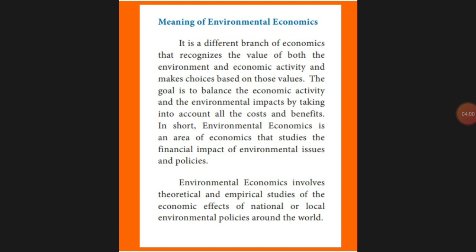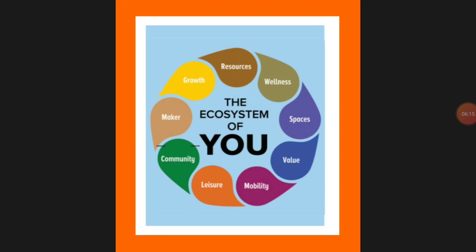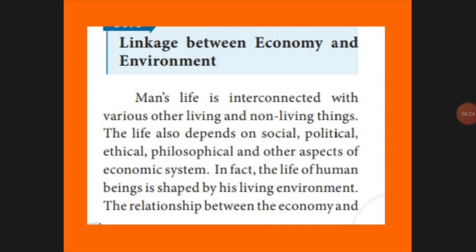An ecosystem includes living and non-living things. Living things include plants, animals, and organisms. Non-living things include weather, earth, sun, and soil. These are all the foundation of the biosphere, as studied in lower classes. All these living and non-living things together form the foundation of the biosphere and decide the health of the entire earth system, both for humans and animals.